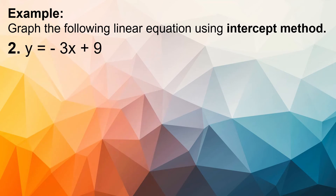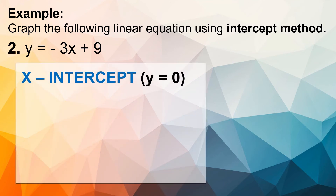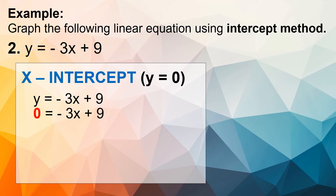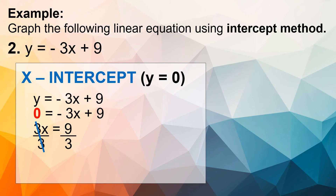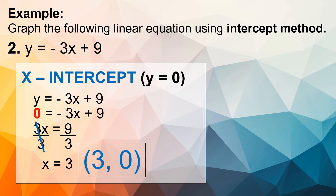Second example: y is equal to negative 3x plus 9. We will use the same steps to find the x and y-intercepts. For the x-intercept, y must equal 0. Substituting: 0 equals negative 3x plus 9. We transpose negative 3x to the left side, and the sign becomes positive, giving us 3x equals 9. Dividing both sides by 3, x equals 3. Our coordinates will be 3 and 0.